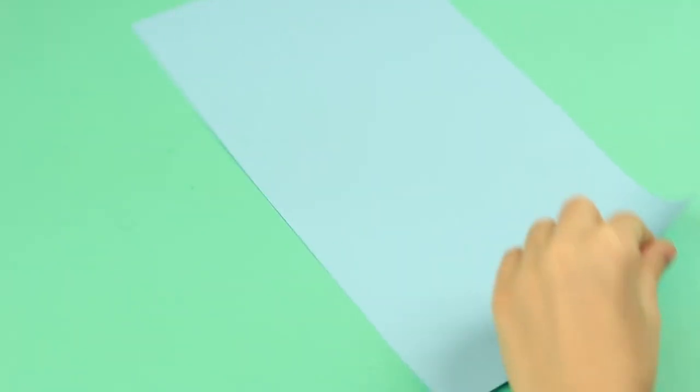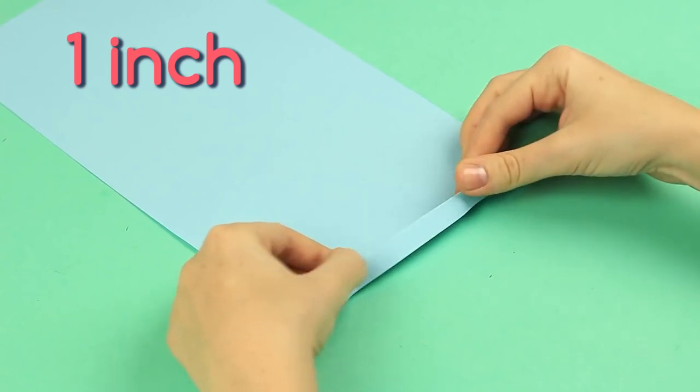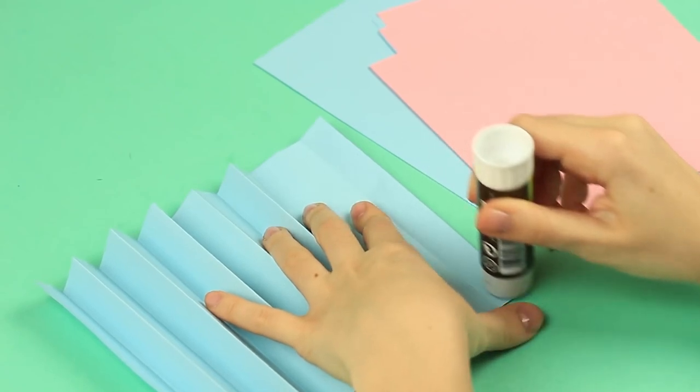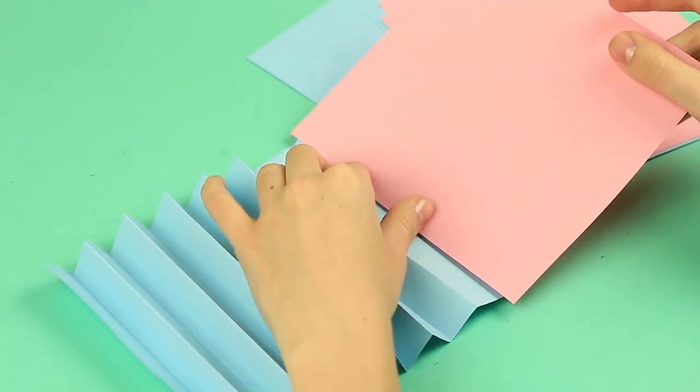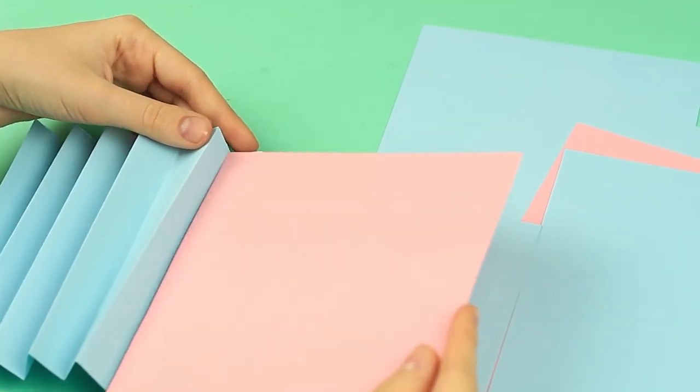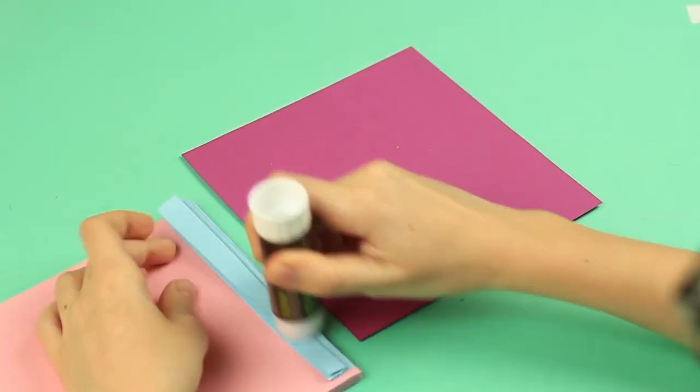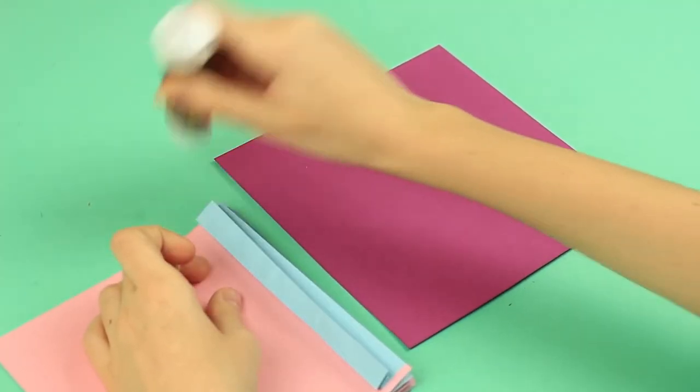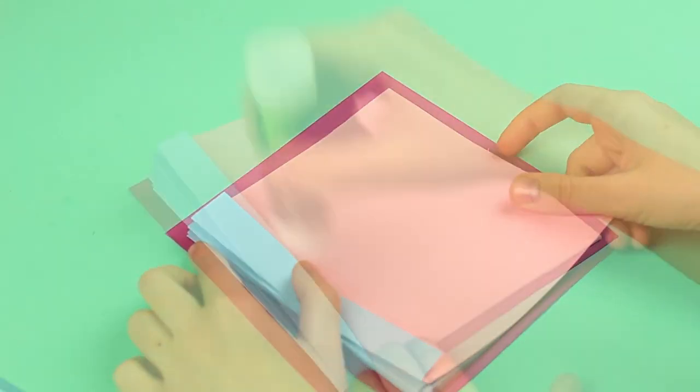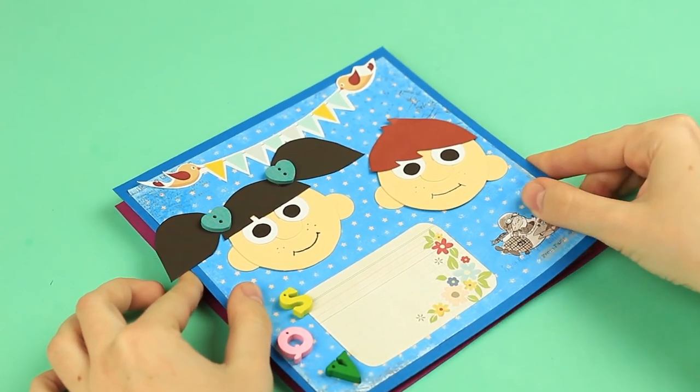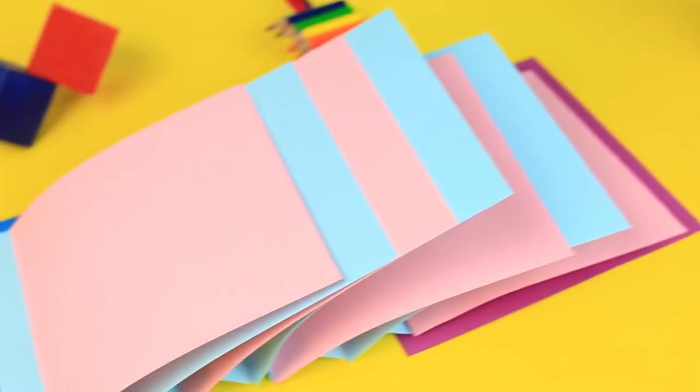Fold the blue paper accordion style with a 1 inch pleat width. Glue a pleat. Attach a page. Continue making a page part of the scrapbook in the same way. Add the glue to the pleat's edge. Attach the accordion to the back cover. Glue the front in the same way. Done! We've made an amusing kids scrapbook to keep photos, notes, and kids drawing.